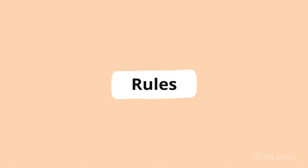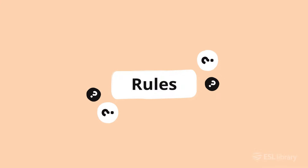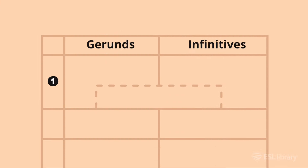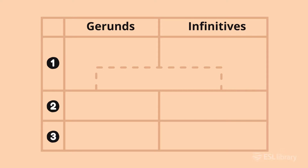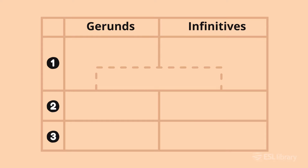How do we know when to use gerunds and infinitives in English? There are three basic rules for gerunds in English, and there are also three basic rules for infinitives in English.